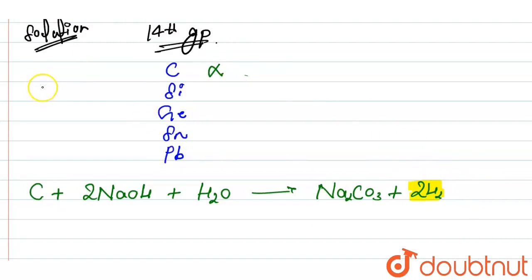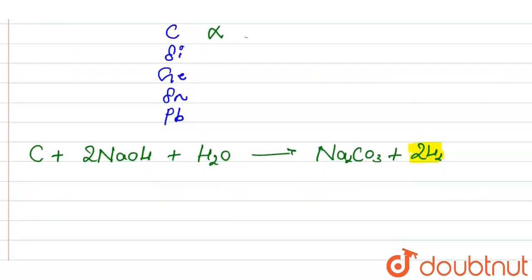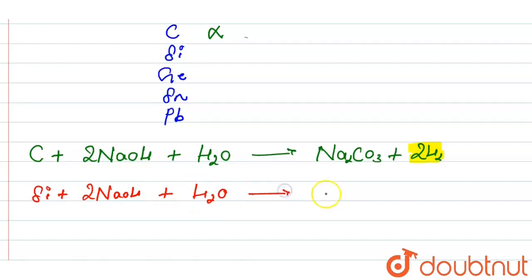Now we move to the second reaction. When silicon reacts with two NaOH in aqueous solution with water, it forms Na₂SiO₃ and 2H₂. Here also hydrogen gas is evolved, so silicon is not our answer.